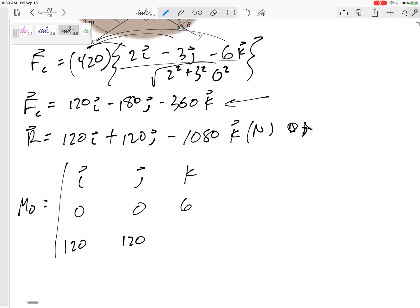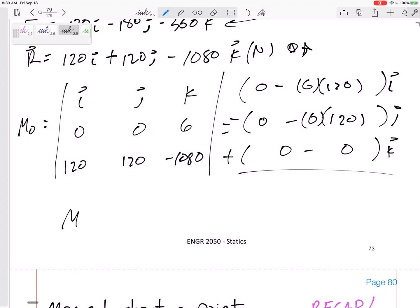And this is 120, 120, negative 1080. So my I component will be 0 minus 6 times 120. Minus my J component will be 0 minus 6 times this 120. And then plus my K component, 0 minus 0 actually. So this moment would be negative 720 in the I, positive 720 in the J. Units: Newton meters.